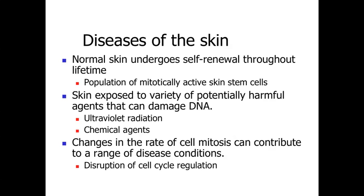If we take a look at the skin, what we've got is a structure that's going to be completely covering the body, that is going to be exposed to a variety of harmful agents in the world around us. We've got a set of cells within our epidermis that are going to have to continue to divide throughout the lifetime, so they need to maintain the ability to divide. They need to have coherent, reliable DNA within their cells, but they're relatively susceptible because they're close to potentially harmful agents outside of the body. And so what we've got is a lot of mitotically active skin cells, stem cells, very close to where they can be exposed to ultraviolet radiation and chemical agents.